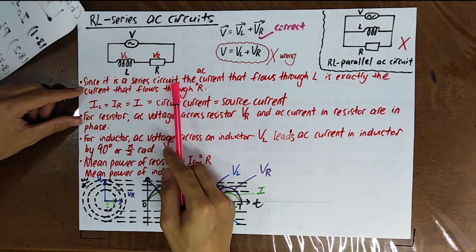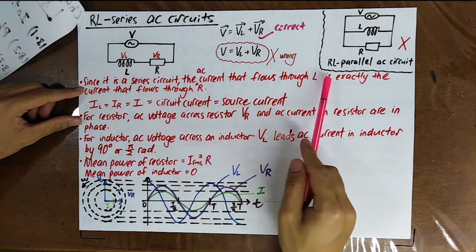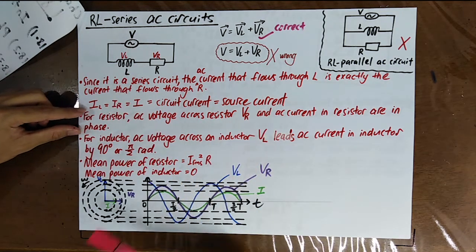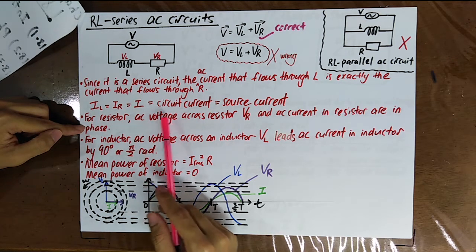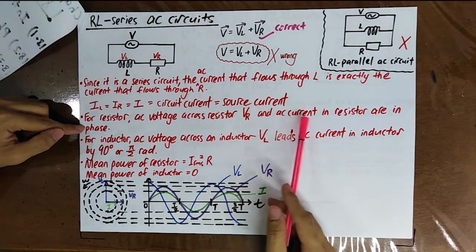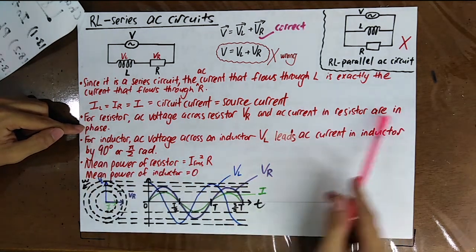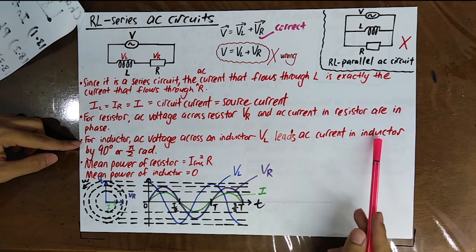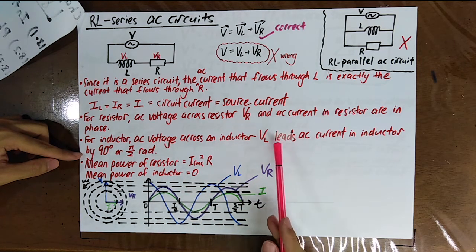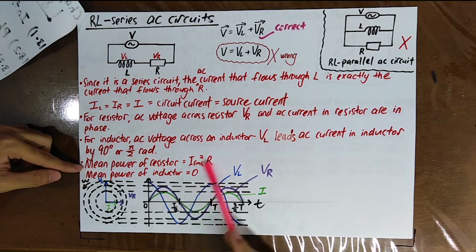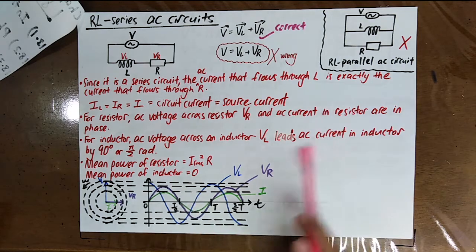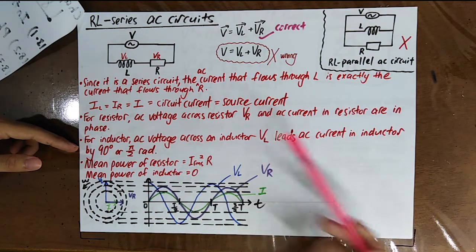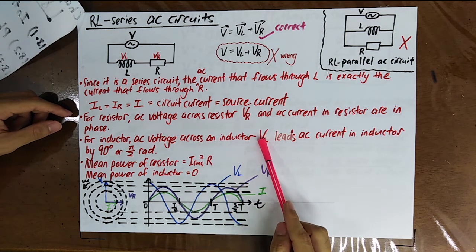Since it is a series circuit, the alternating current through L is exactly the current through R, which equals the source current. For the resistor, VR and the current are in phase. For the inductor, VL leads the current by 90 degrees. The mean power of the resistor follows its formula; the mean power of the inductor is zero.